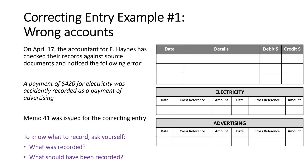To know what to record, we need to ask ourselves two questions: what was recorded, and what should have been recorded? The answer to our first question — what was recorded — was a payment for advertising.